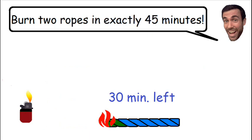Which means we have 30 minutes left until the bottom rope is also going to completely vanish. So at this point, we can double the speed of the bottom rope by lighting the other side. By doubling the speed of the bottom rope, it will completely burn in the next 15 minutes instead of 30 minutes.